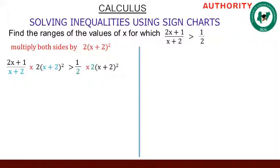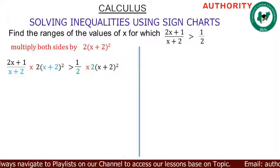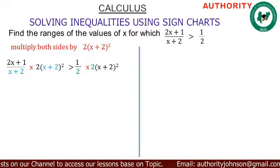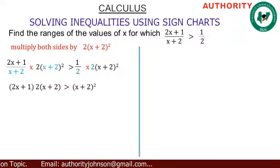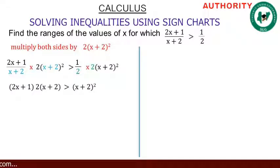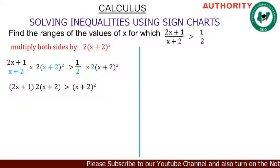On the left hand side, we have (x + 2) in the denominator and (x + 2) squared, so they are the same — we cancel one (x + 2). On the right hand side, the 2 cancels the 2. So what remains on the left is (2x + 1) · 2 · (x + 2), and on the right we have (x + 2) squared, because we don't cancel anything there.